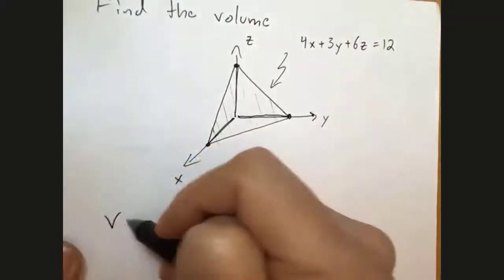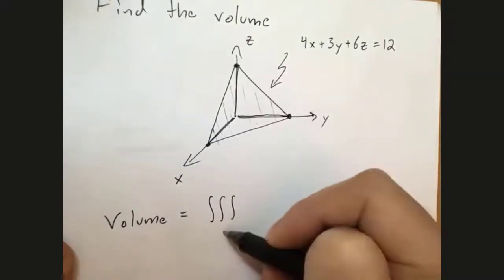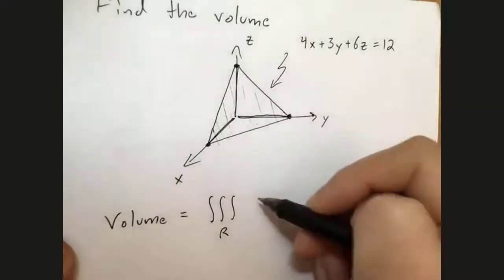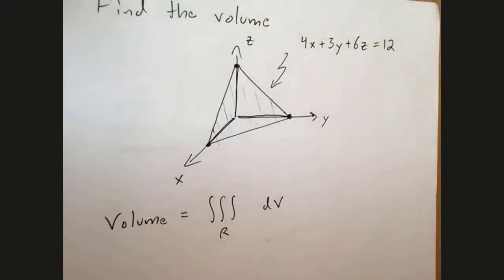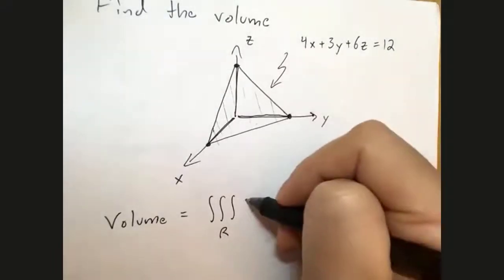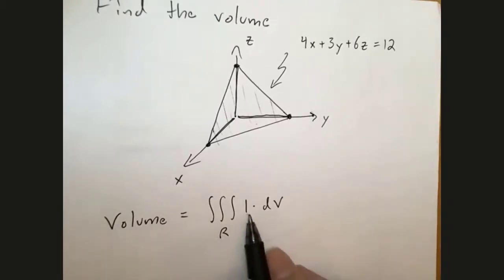I want to find the volume. Volume is obtained by integrating a triple integral over the region. What would I integrate? Remember how we did area - we integrated the function 1. So to find volume you integrate the function 1. That should make sense because if you integrate dV you should get V. If you sum up all the tiny little volumes you end up with the total volume. Our function is just 1.